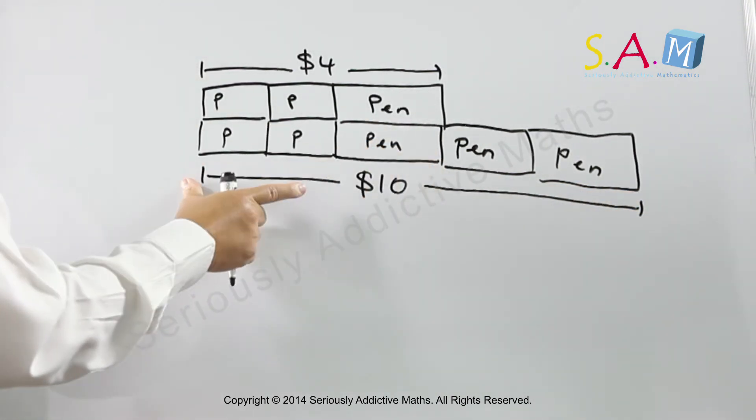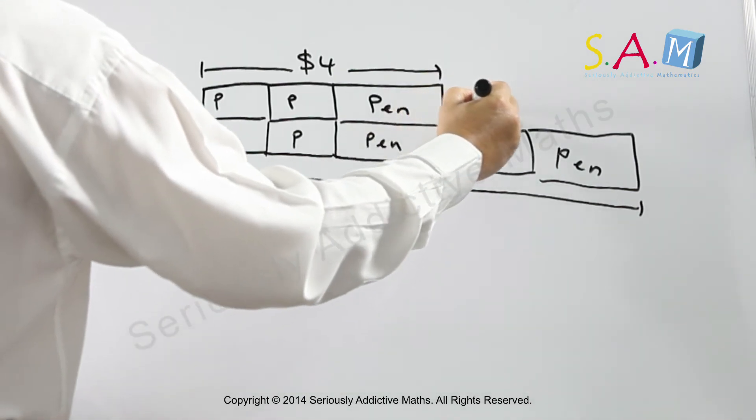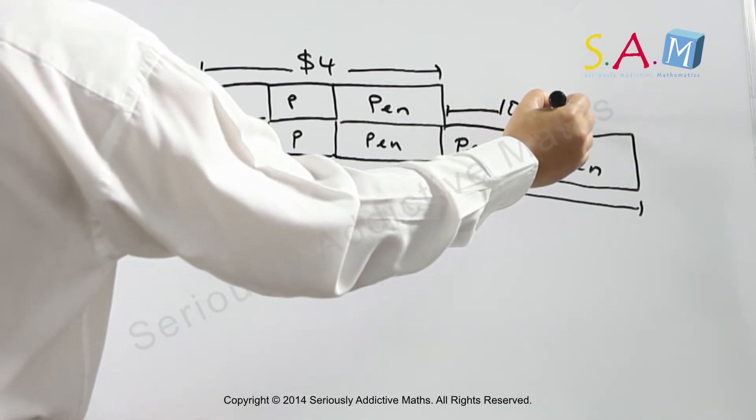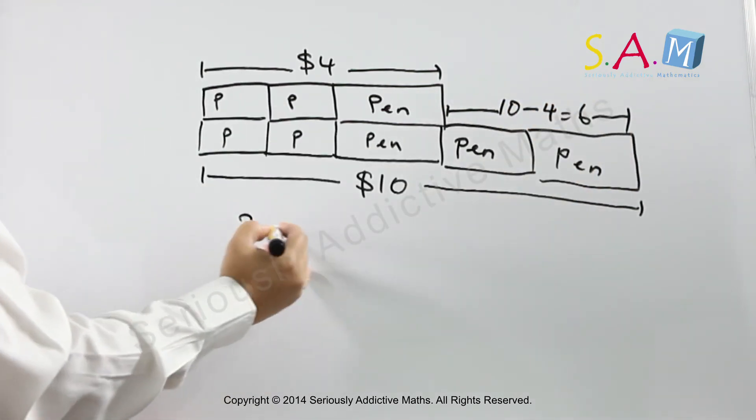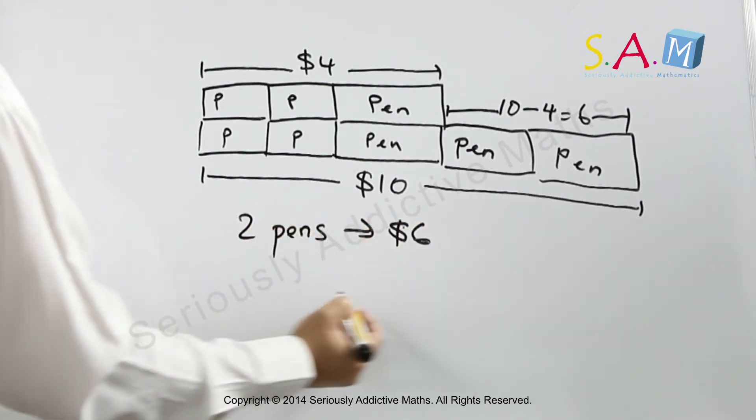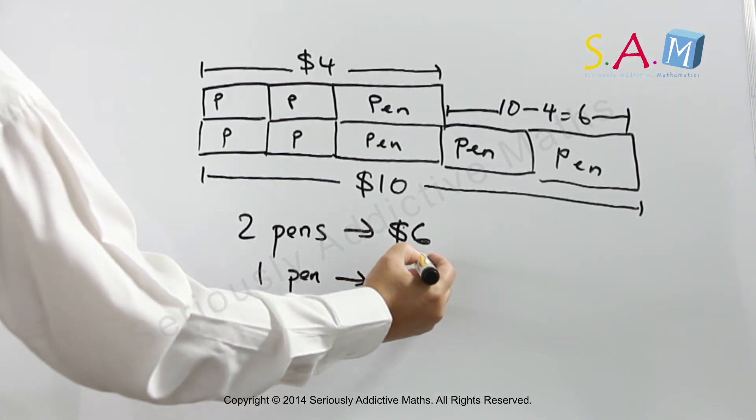Two pencils and three pens cost ten dollars all together. And here we can see that if up to here is four dollars, this must be ten take away four dollars, which is actually six dollars. So we know that two pens cost six dollars, so one pen must cost three dollars.